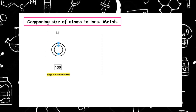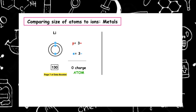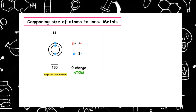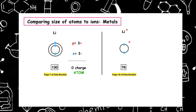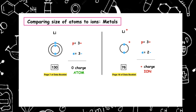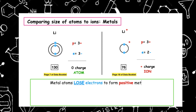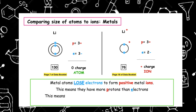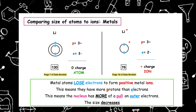We also have to compare the size of atoms to ions. Looking at metal atoms changing to metal ions, taking lithium as our first example: using page 7 of the data booklet we can identify that the atomic radius is 130. Metal atoms lose electrons to form positive metal ions, meaning they have more protons than electrons. This means the nucleus has more of a pull on the outer electrons and the size decreases.